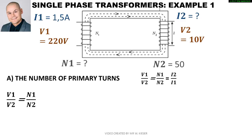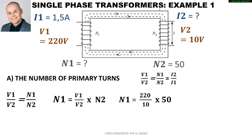We've got 1.5 amps being drawn from the supply. I2, the current being supplied to the load, is the unknown factor. V1 is 220 volts, V2 is 10 volts, making it a step-down transformer, and we have 50 turns on the secondary side. To calculate the number of primary turns we use the voltage values as known factors. Substituting into the equation: 220 over 10 multiplied by 50 turns gives us N1 equals 1,100 turns.